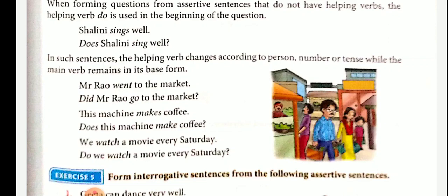Now, exclamatory sentences. Sentences that express strong feelings are called exclamatory sentences. An exclamation mark is used at the end. Alas! I am undone — to express sorrow, we use 'alas.' Hurray! India has won the match — to express joy, we use 'hurray.' What a horrible death! — horror. Beware! He is going to hit you! — warning. Oh dear! You are hurt! — concerned. What a pleasant surprise! — surprise.